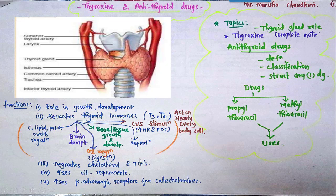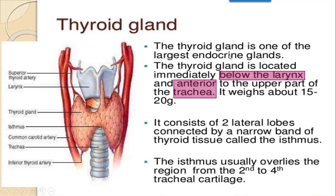We are going to start with the Synthesis of Thyroid Hormones. Before going to synthesis we will talk about the thyroid gland, its location. As you can see, this is the thyroid gland. It is one of the largest endocrine glands, located below the larynx. This part labeled here is the larynx. It is situated below the larynx and anterior to the trachea.